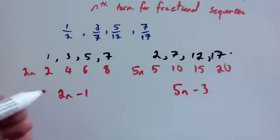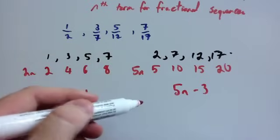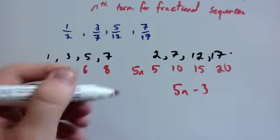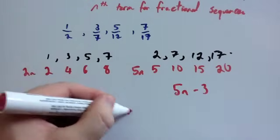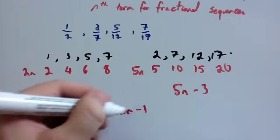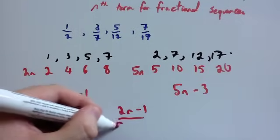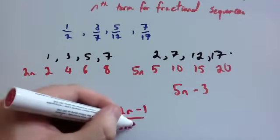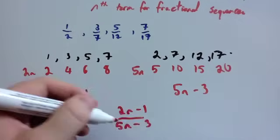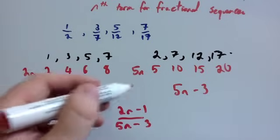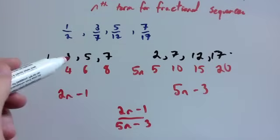So we've got the nth term for the numerators and the nth term for the denominators. We've now got to write it as a fraction. So it's going to be two n minus one over five n subtract three. That's the nth term for this fractional sequence.